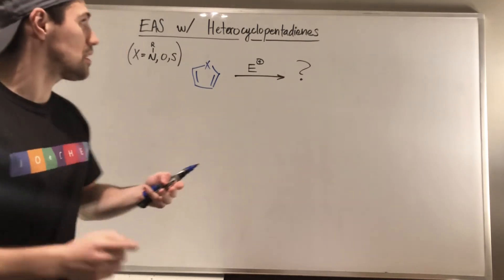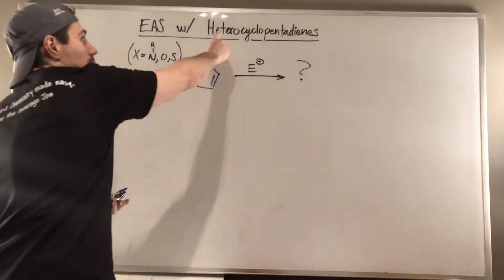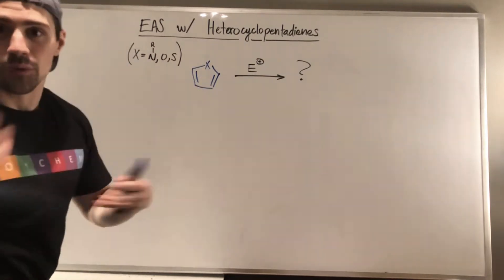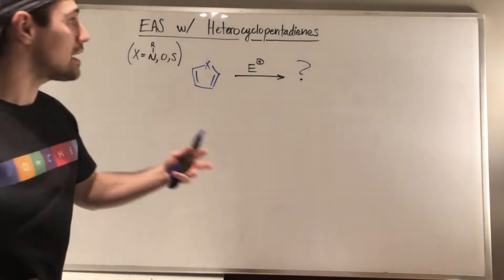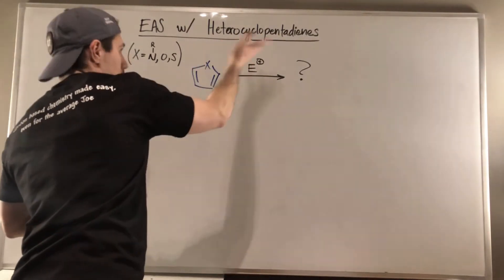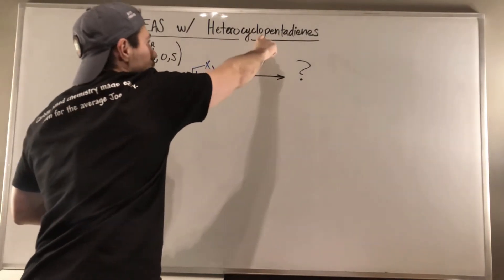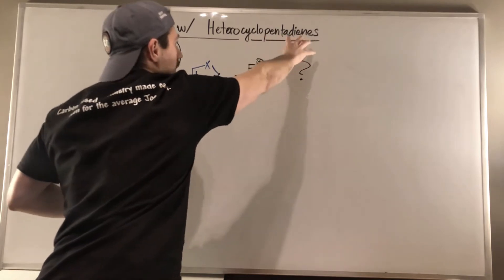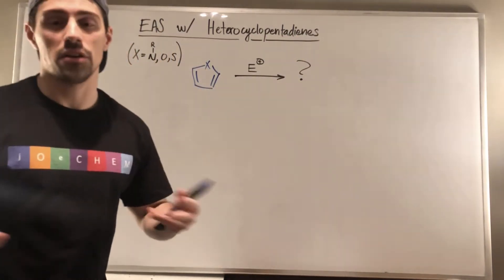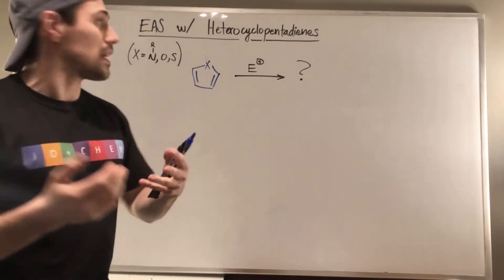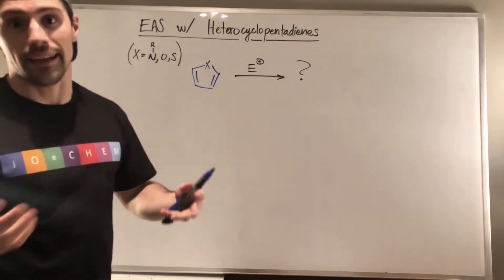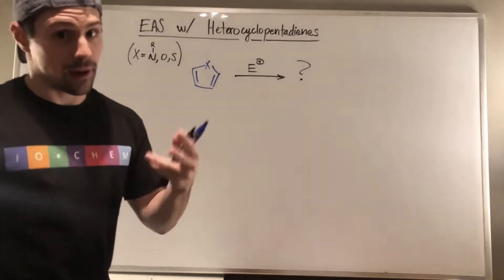Heterocycle means we have two or more atoms in our ring; cyclo means five-membered; and pentadiene means two double bonds. So that's how we get heterocyclopentadiene — quite a mouthful. If we're looking at this, we can see that we have symmetry here and here, and here and here.